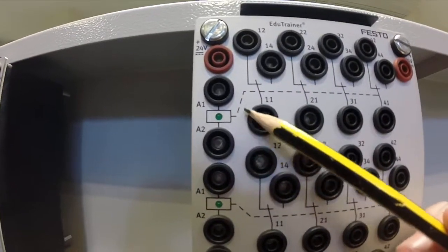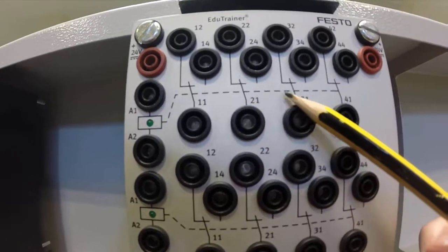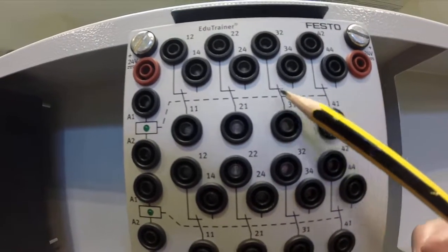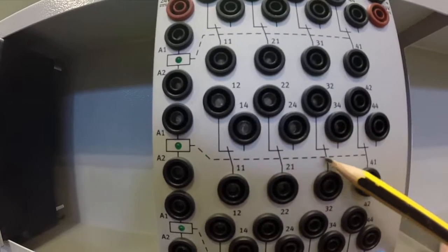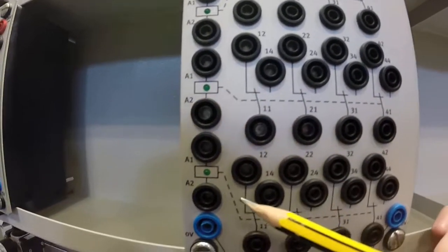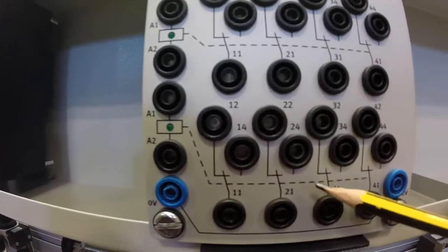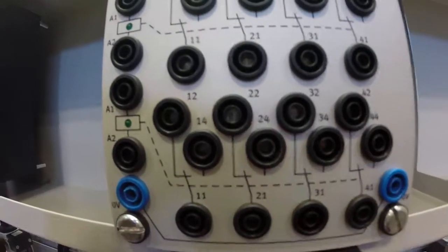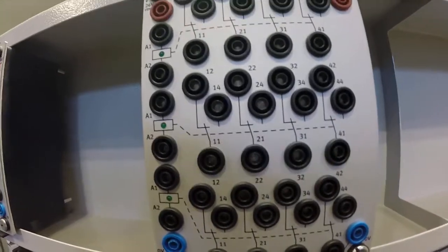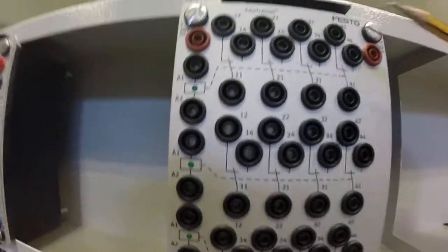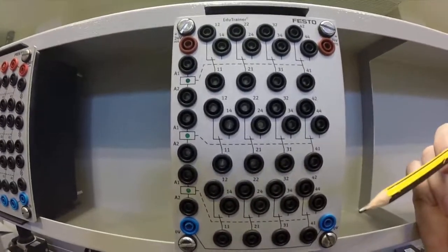And each relay controls a bank of contacts that we have along here. So this relay controls that bank, and we follow the lash line for this bank of contacts, and the third relay controls this bank of contacts. Following our black lines is going to tell us a lot about the connections of these contacts and how we can make our way through this box.